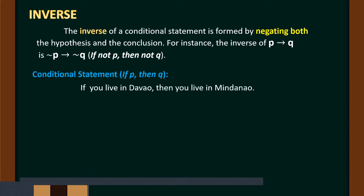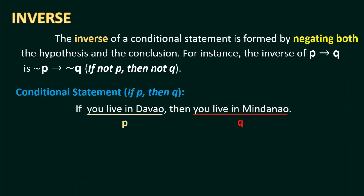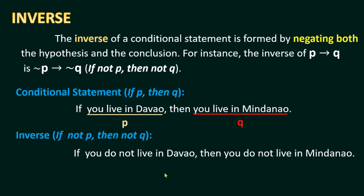For the conditional statement 'If you live in Davao, then you live in Mindanao,' our hypothesis is 'you live in Davao' and our conclusion is 'you live in Mindanao.' For the inverse — 'If not P, then not Q' — we negate both: 'If you do not live in Davao, then you do not live in Mindanao.' The symbol shown represents the negation — 'not P' means 'you do not live in Davao,' and 'not Q' means 'you do not live in Mindanao.'